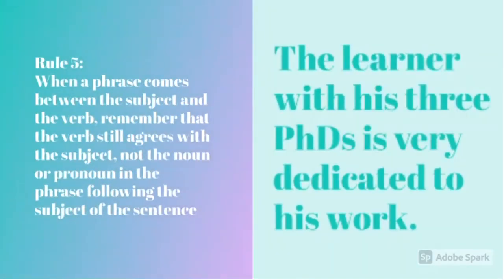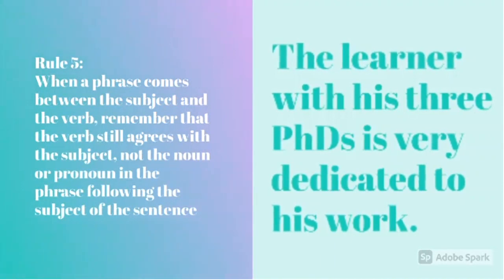Rule 5 is, when a phrase comes between the subject and the verb, remember that the verb still agrees with the subject, not the noun or pronoun in the phrase following the subject of the sentence. An example is, the learner with his three PhDs is very dedicated to his work. Here, we are ignoring the phrase in the middle.